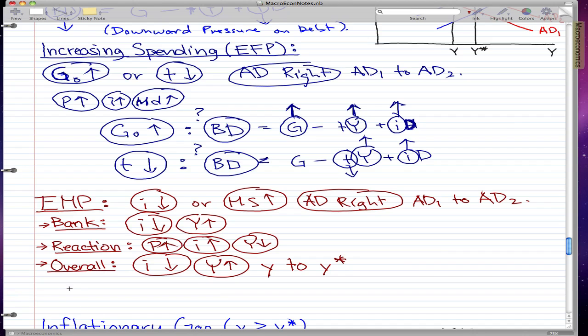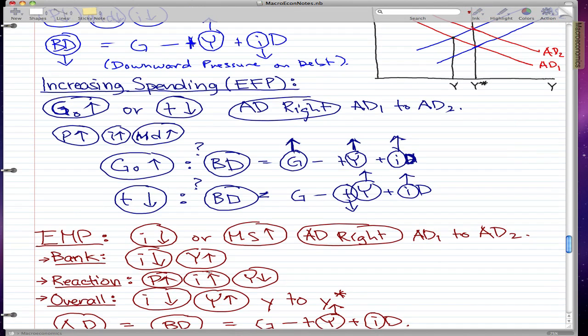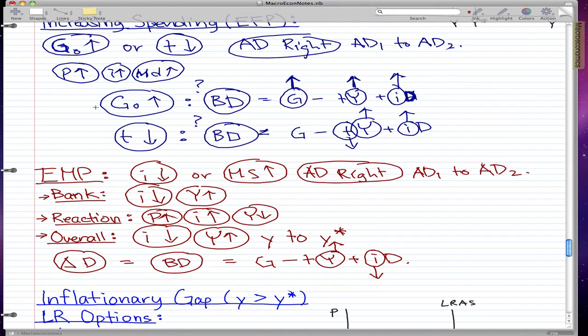And then, the new thing we have to focus on is the change in debt, which is equal to our budget deficit. And that is equal to G minus TY plus ID. And we know from here that Y has risen, that the overall effect Y has increased and the interest rate has decreased. And this means that this is pretty much the same thing as the natural occurrence for the budget deficit. So then there's downward pressure on debt and the change in debt falls.